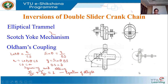In the scotch yoke mechanism, link one is fixed, as shown in the figure. The link in the form of a block slides inside the mechanism. This is the crank, and it converts rotary motion into reciprocating motion.